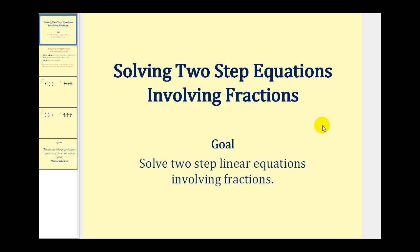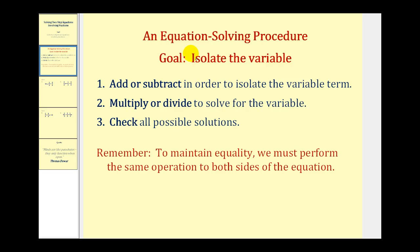Welcome to another video on solving two-step equations. This video will deal with two-step equations with fractions. Remember, when solving a two-step linear equation the goal is to isolate the variable on one side of the equation. We'll do this by first adding or subtracting to isolate the variable term, then multiplying or dividing to solve for the variable, and finally checking our answers. It is important to remember that to maintain equality we must perform the same operation on both sides of the equation.